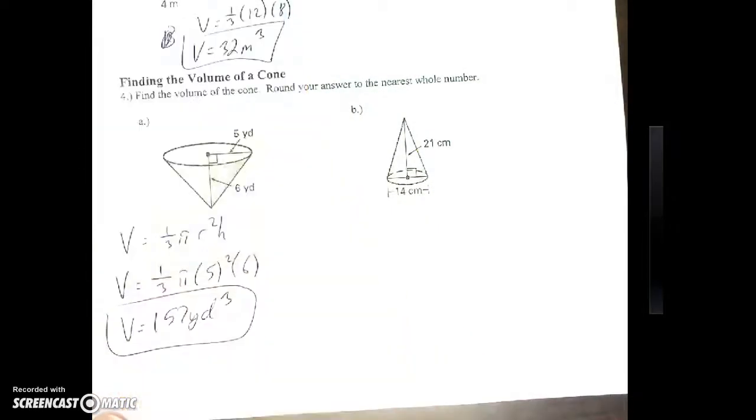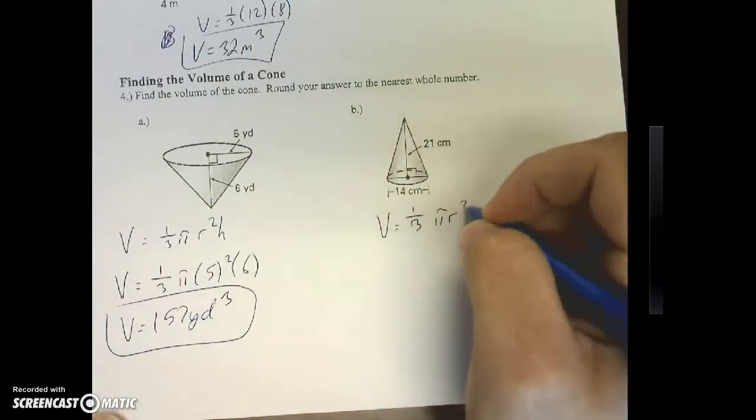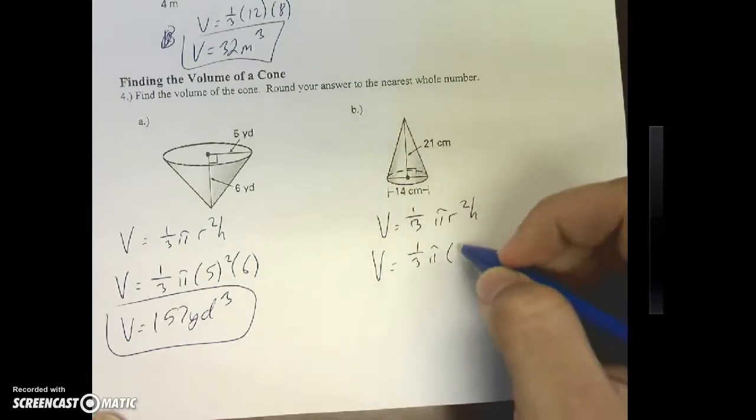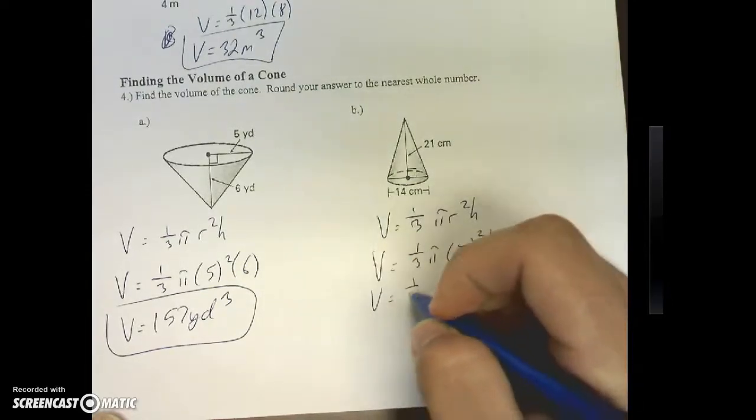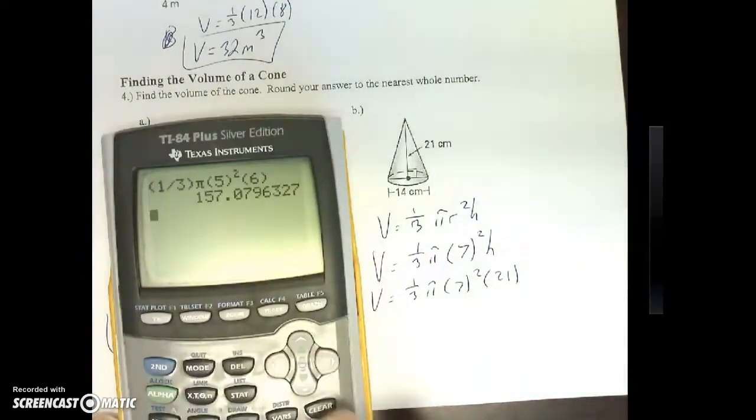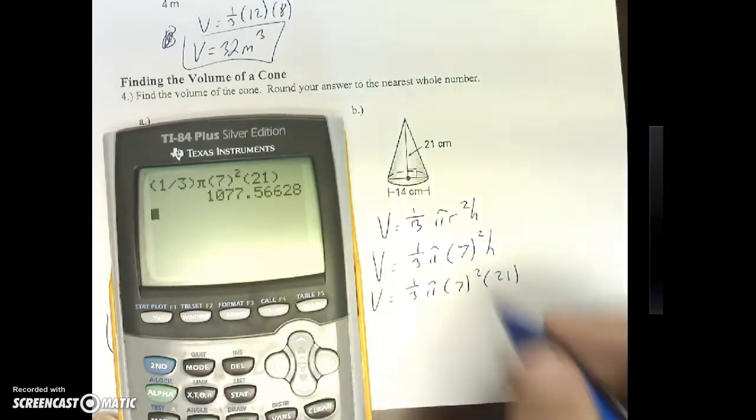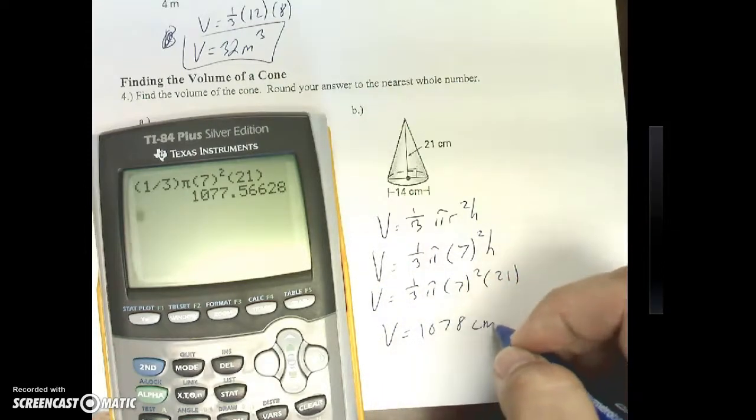And finally, volume equals one-third pi r squared h. Volume equals one-third pi. My r is seven squared. My h is 21. So parentheses, one-third pi. Seven squared. 21. Volume equals 1,078 centimeters cubed.